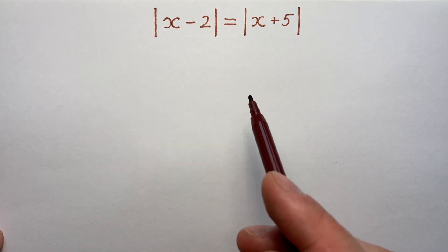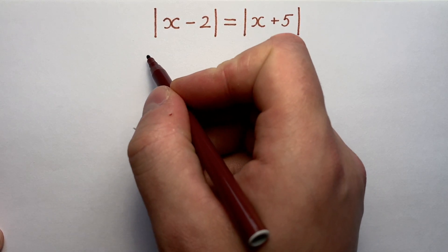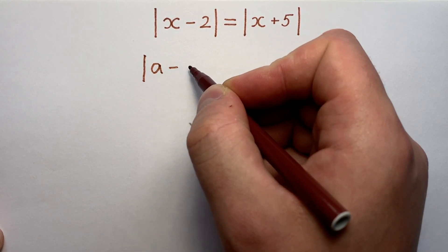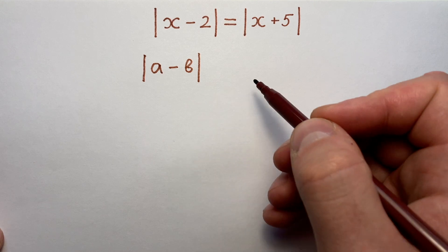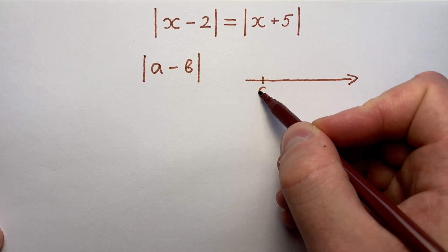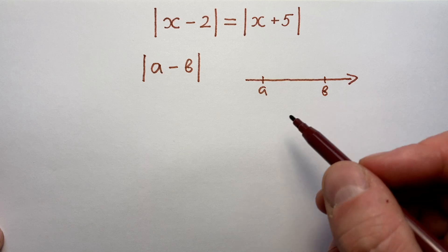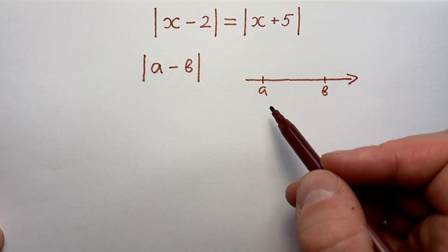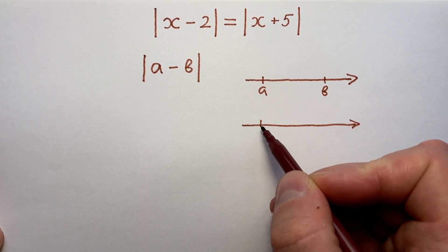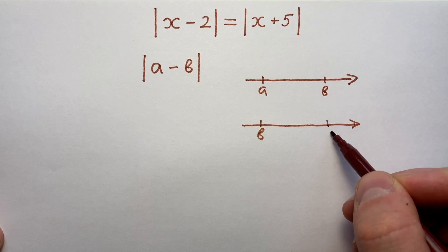We can remember that modulus of the difference of two numbers A and B is the distance between points A and B on a number line. And it's not so important which of these two numbers is bigger. We can write it also in this way.